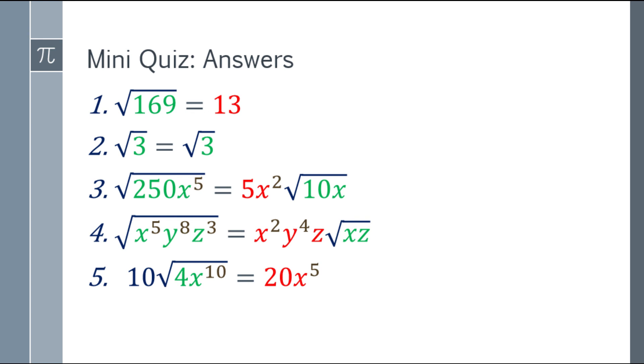Next one. 10 square root of 4x to the 10th. The answer will be 20 x to the 5th. Nasa yung square root of 4y2, sa labas siya, 10 times 2 is 20. So dun nang galing yung 20.